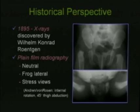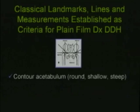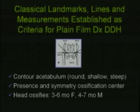Stress views were attempted by abducting the thighs about 45 degrees with internal rotation to determine if the hip was subluxed or dislocated under stress. Classical landmarks, lines, and measurements were established as criteria for plain film diagnosis of DDH. Important features include assessment of acetabular shape — whether round, shallow, or steep — and whether ossification centers in the femoral heads are formed and symmetric, since delayed ossification may occur on the affected side. The head generally doesn't ossify until about three to six months of life.